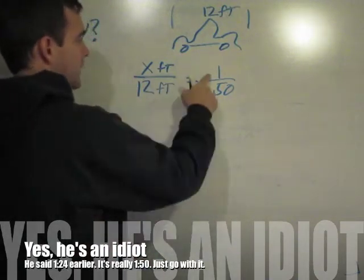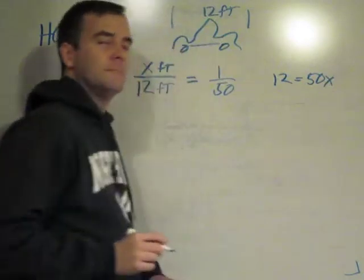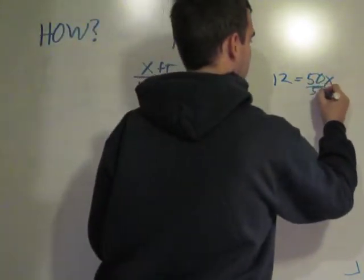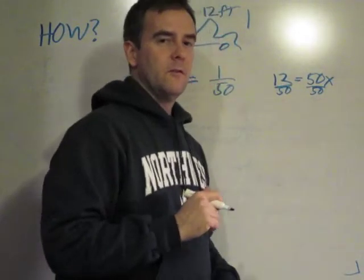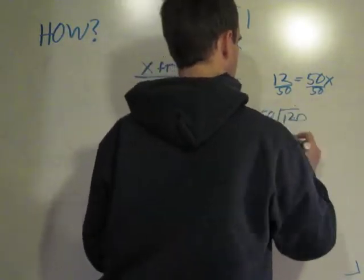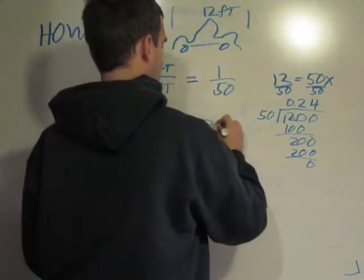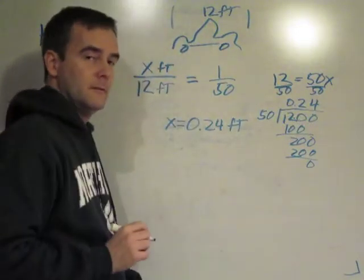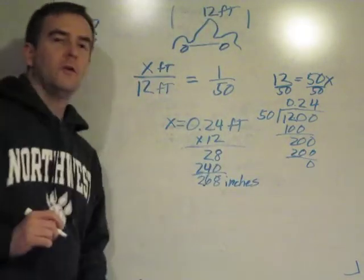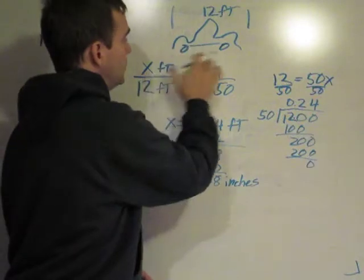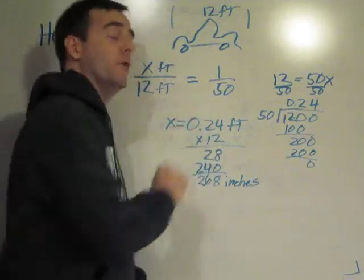Cross-multiply. 12 times 1 is 12. 50 times x, of course, is 50x. And what's x? I divide out to find out. So, x equals 0.24 feet, which is 2.68 inches. My model car will be only 2.68 inches wide. That's about this much. That's going to be an awfully small car. I might want to use a bigger scale.